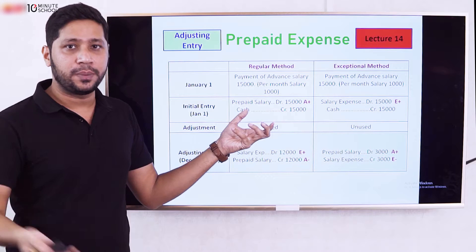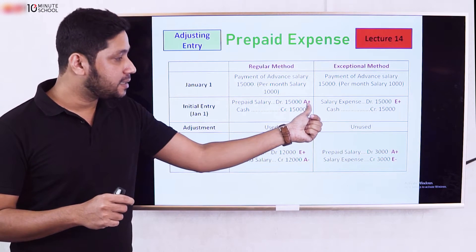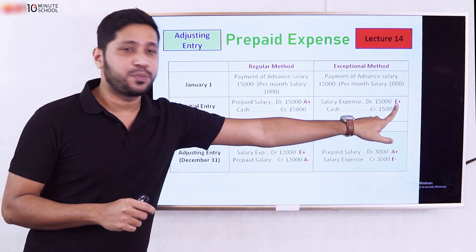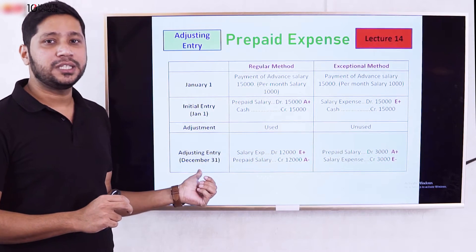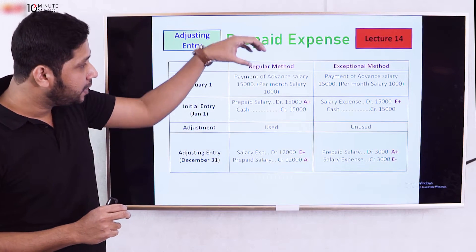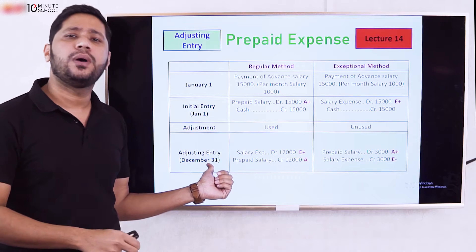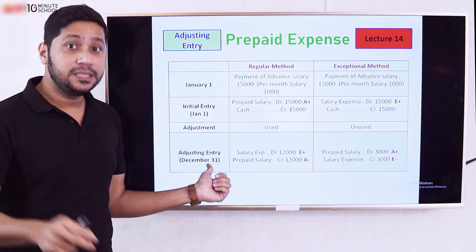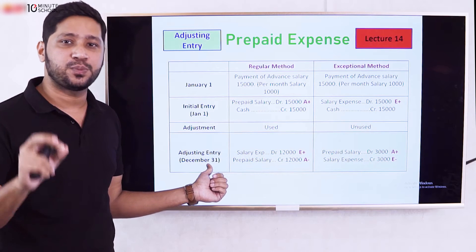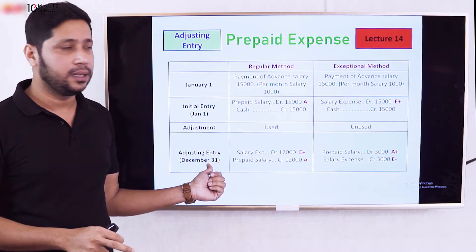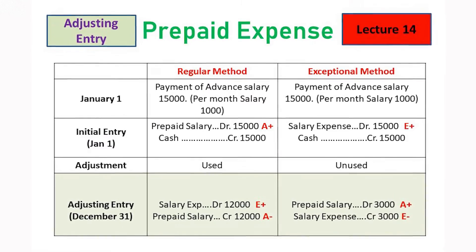How we do the credit initially depends on the adjusting entry approach. Using the regular method on December 31st, we look at what has been used. The salary expense at the end of the period needs to be determined.